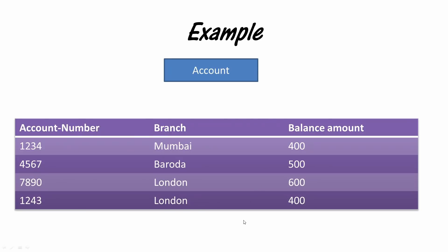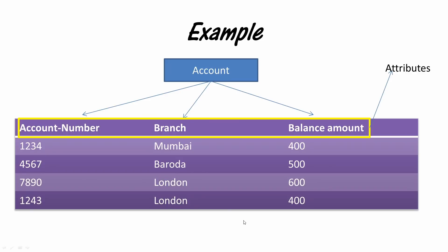The three columns are account number, branch, and balance amount. These are the attributes of the entity account. Each row represents the information related to that particular record. For example, account number 4567 is at branch Baroda with a balance of 500. All information in one row is related to each other, and this row is called a tuple in the relational data model.